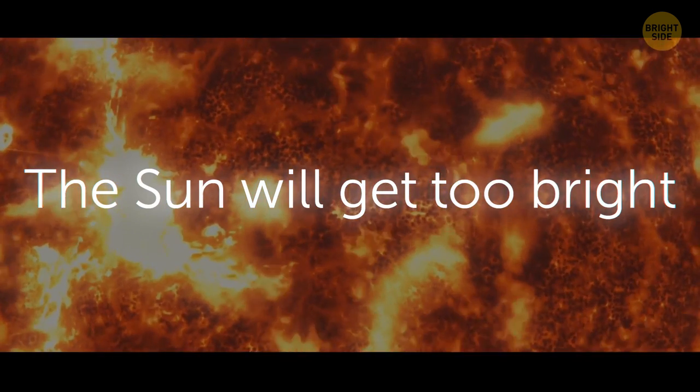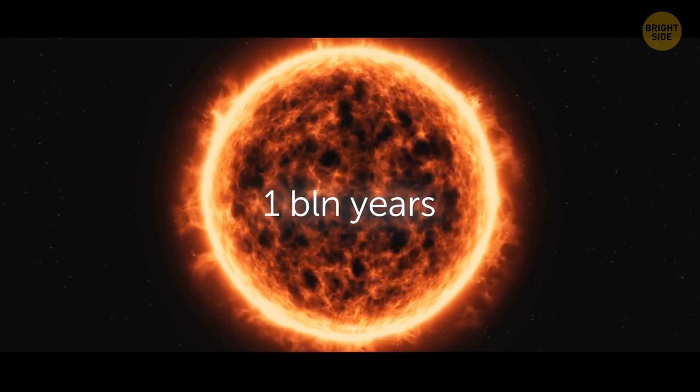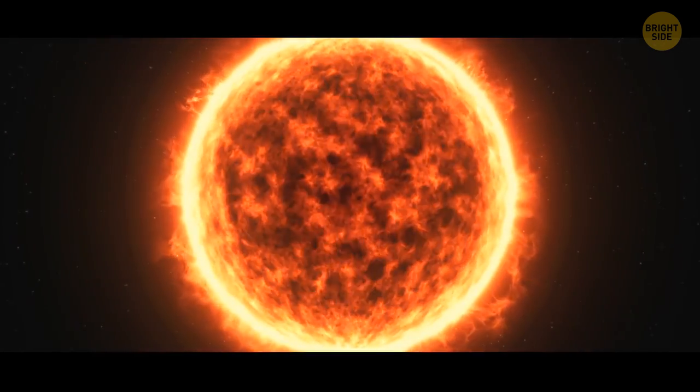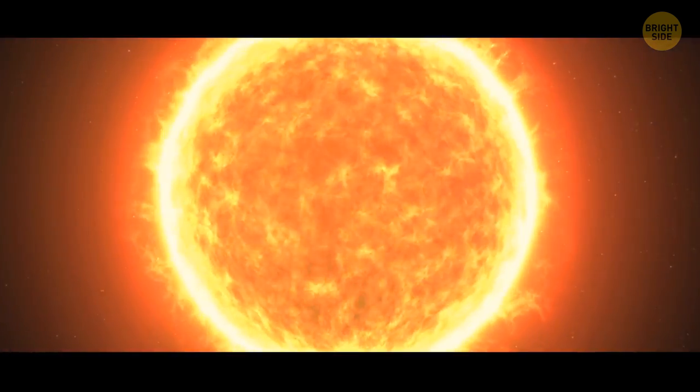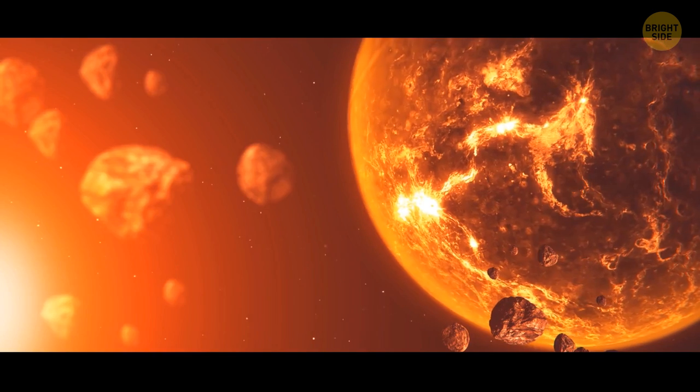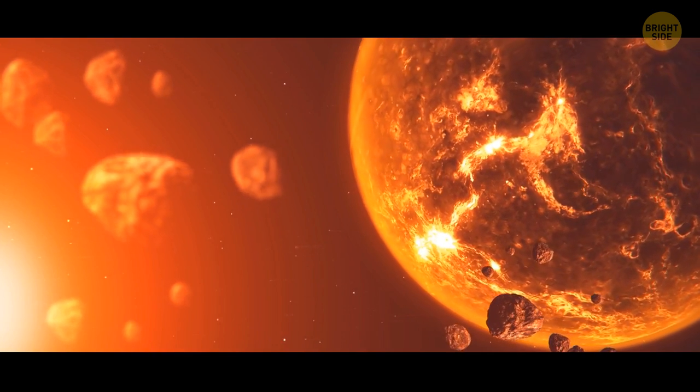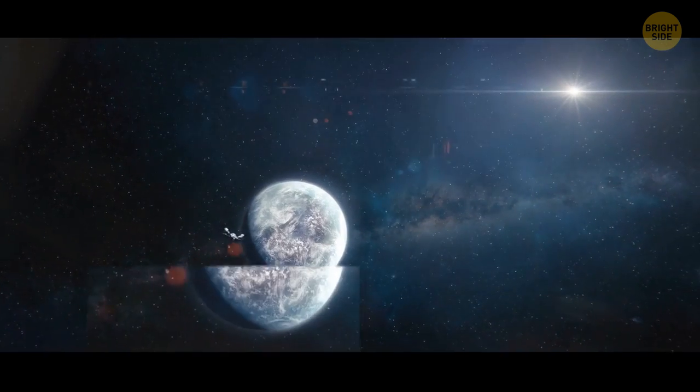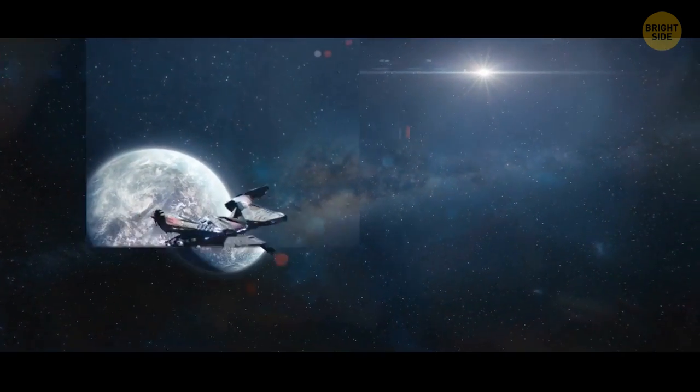The Sun will get too bright. It'll take about a billion years for the Sun to raise its luminosity by 10%. This will be devastating for planets in the solar system, and life on Earth won't be possible beyond this point. By then, our species will likely have found a new planetary home.